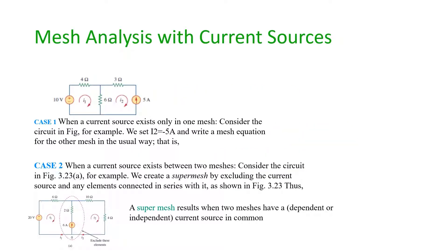In the first case, you see this circuit. We want to find I1 and I2. In this first case, there is no problem — you can apply KVL. Apply KVL at loop 1.